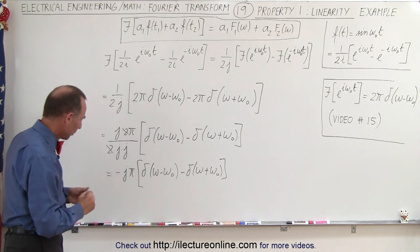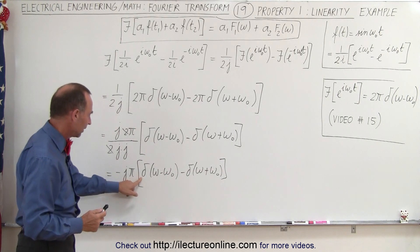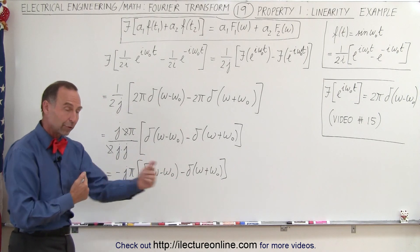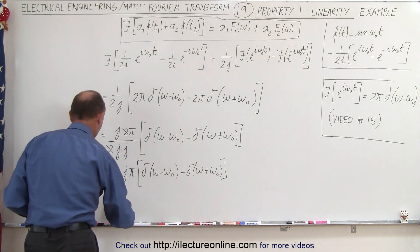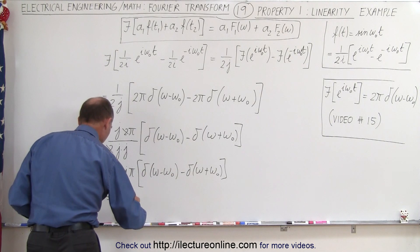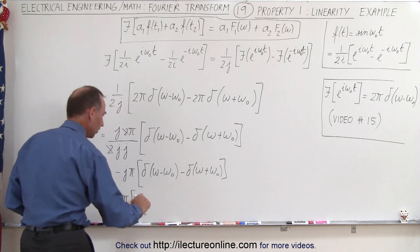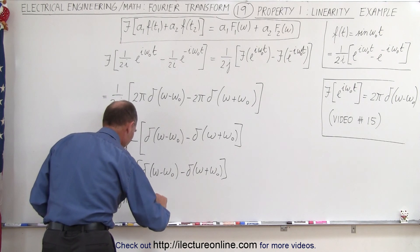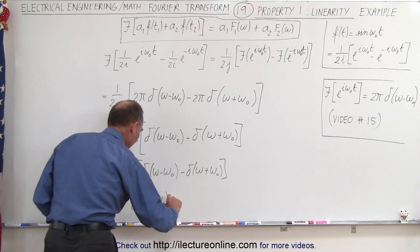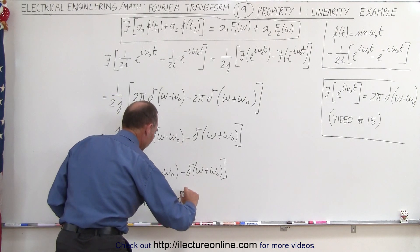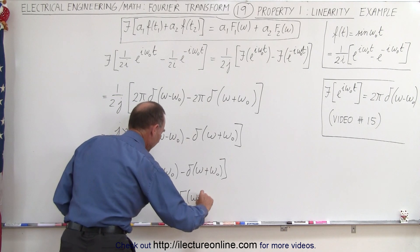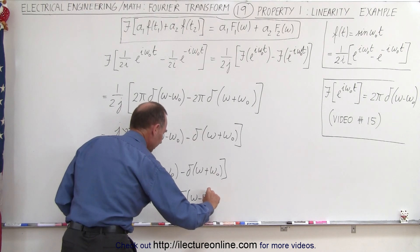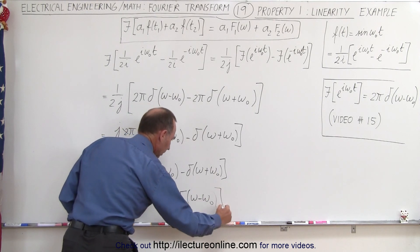Finally, if we want to get rid of this negative sign, we can multiply by negative and reverse the order. This becomes j times pi times delta of omega plus omega naught minus delta of omega minus omega naught.